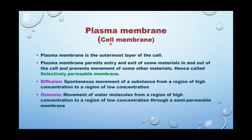Plasma membrane is also called cell membrane. It is the outermost layer of the cell and is also called the selectively permeable membrane. Why is it called selectively permeable? Because it does not allow all substances to pass through it — the exit and entry of any material must be allowed by this membrane. Therefore, it is called selectively permeable.